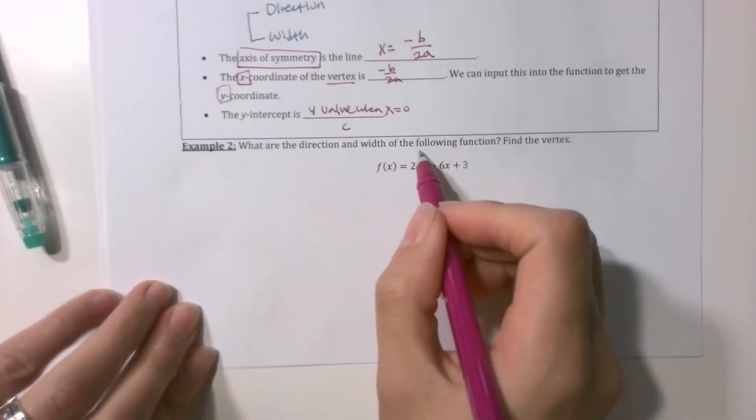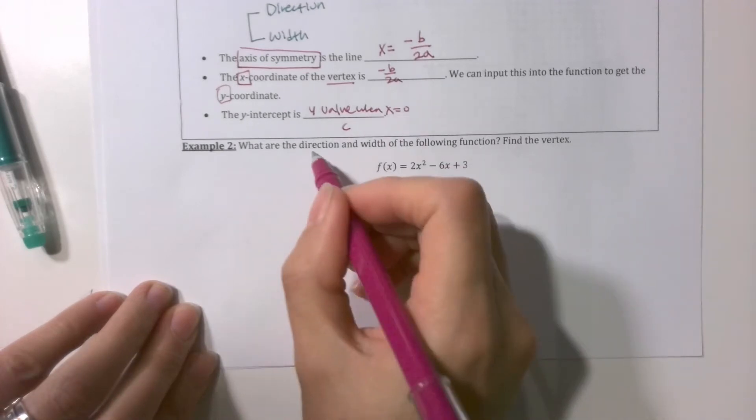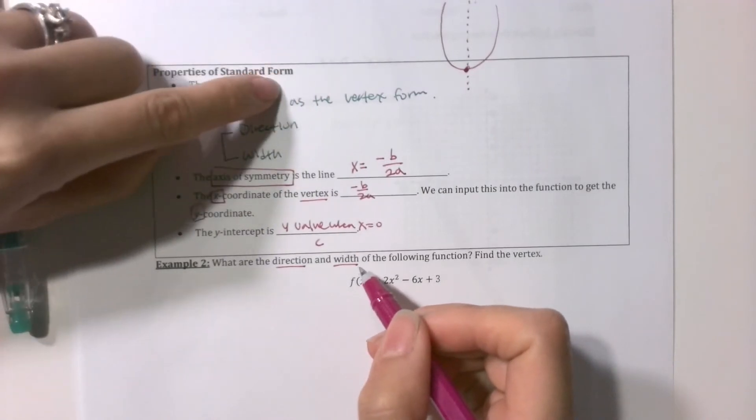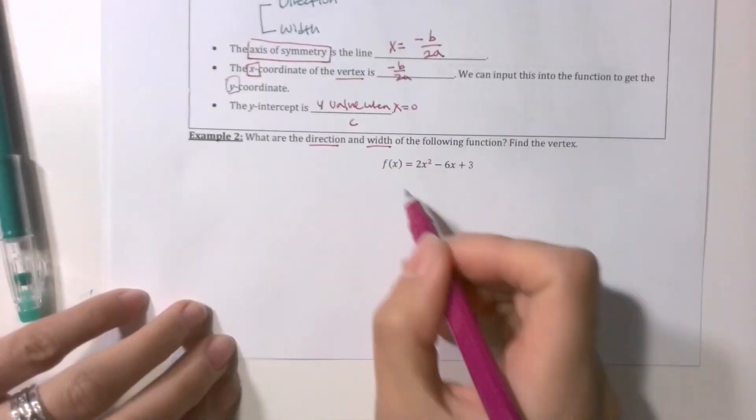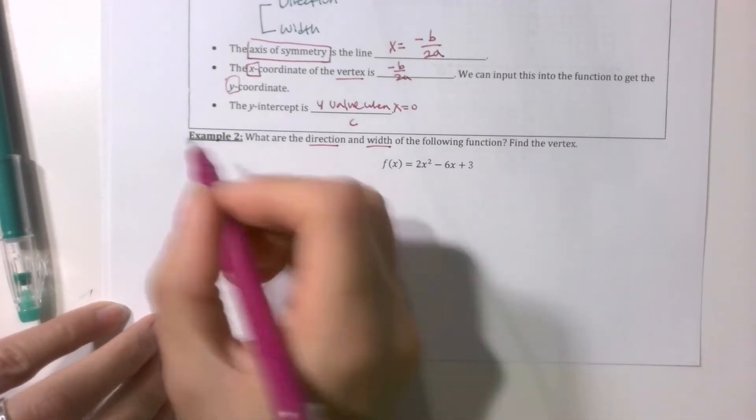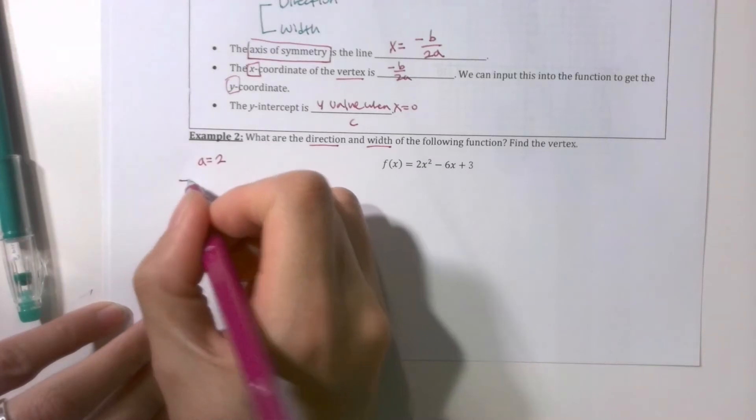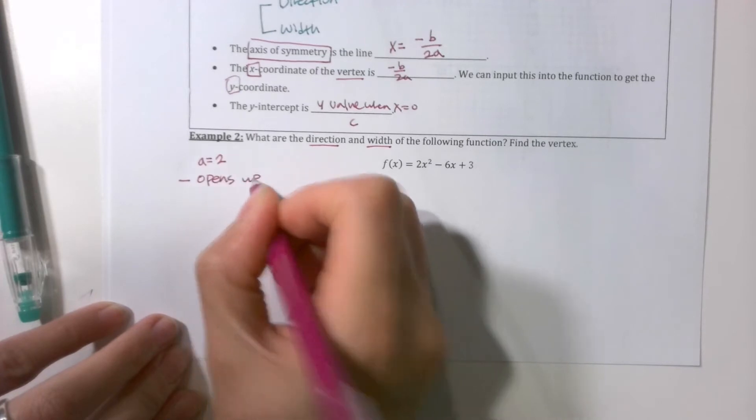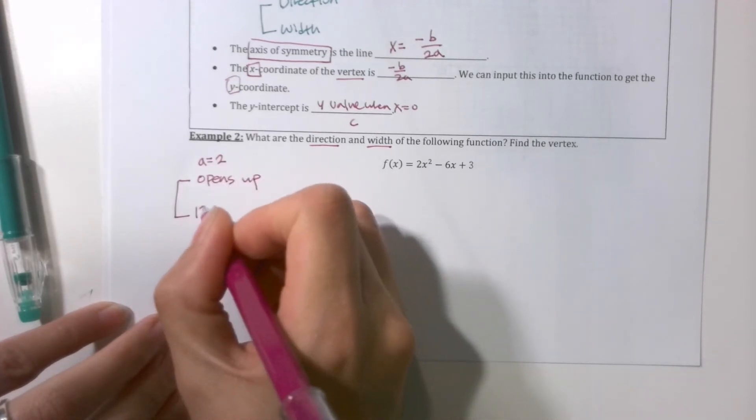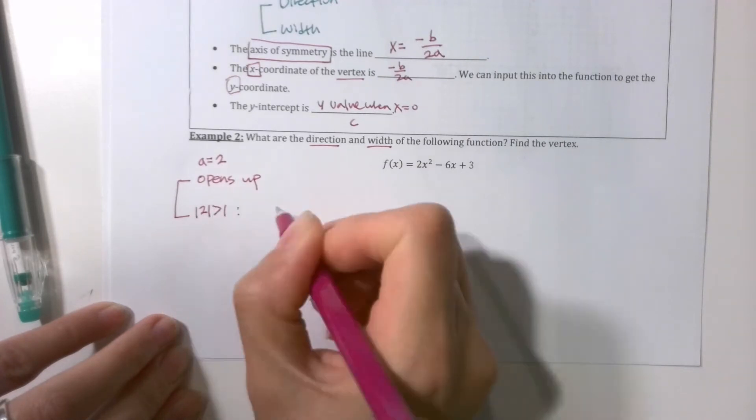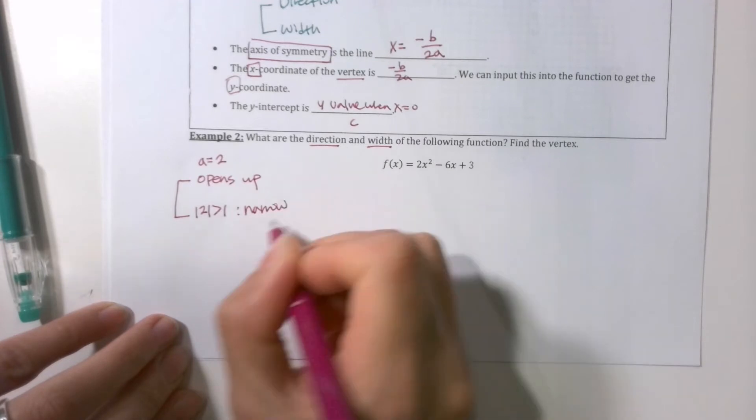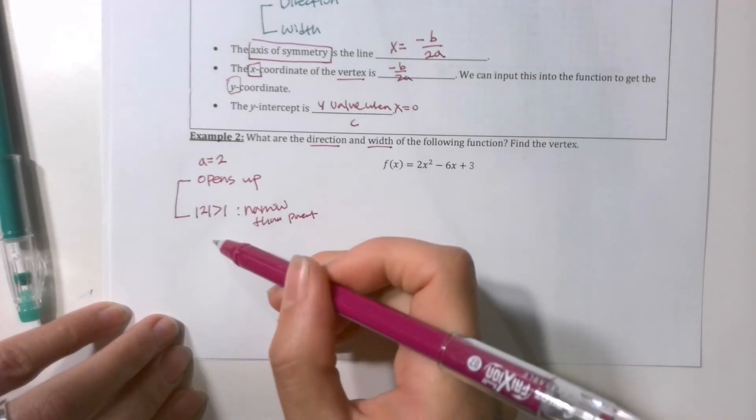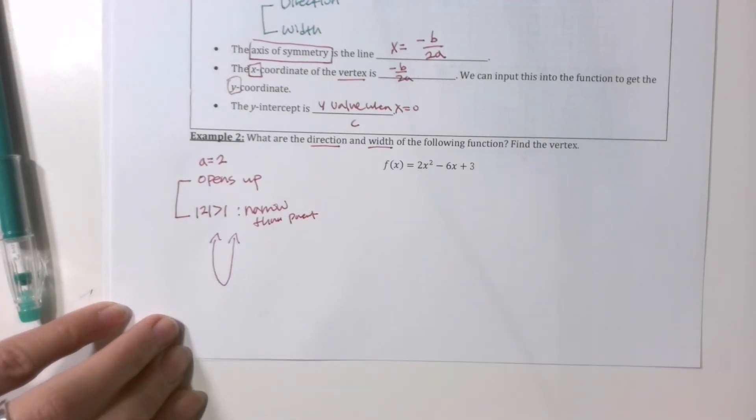So there we go. What are the direction and the width of this? And also find the vertex. Well, if it's asking me the direction and the width, that has to do with the what value? The a value. So what's the a value for this problem? A is 2. Okay, so a is 2. Is 2 positive? Yeah. So since it's positive, it's going to open up. Is absolute value of 2 greater than 1 or less than 1? Greater than 1. So what does that mean? It's going to be narrower than the parent function. So it's going to open up, narrower than the parent function. So it's going to be something like this.